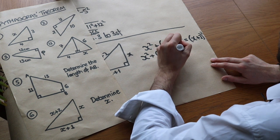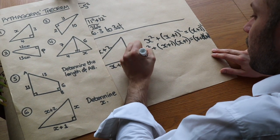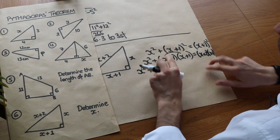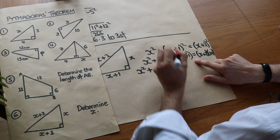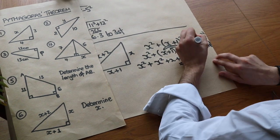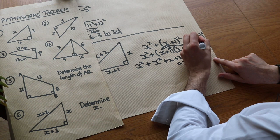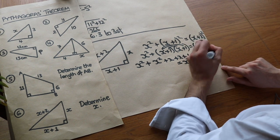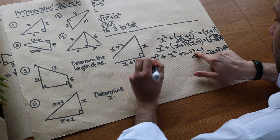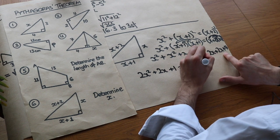Expanding the brackets carefully — writing each bracket out twice — we get: (x+1)(x+1) = x² + x + x + 1 = x² + 2x + 1, and (x+2)(x+2) = x² + 2x + 2x + 4 = x² + 4x + 4. Collecting like terms on the left gives 2x² + 2x + 1, and the right side is x² + 4x + 4.